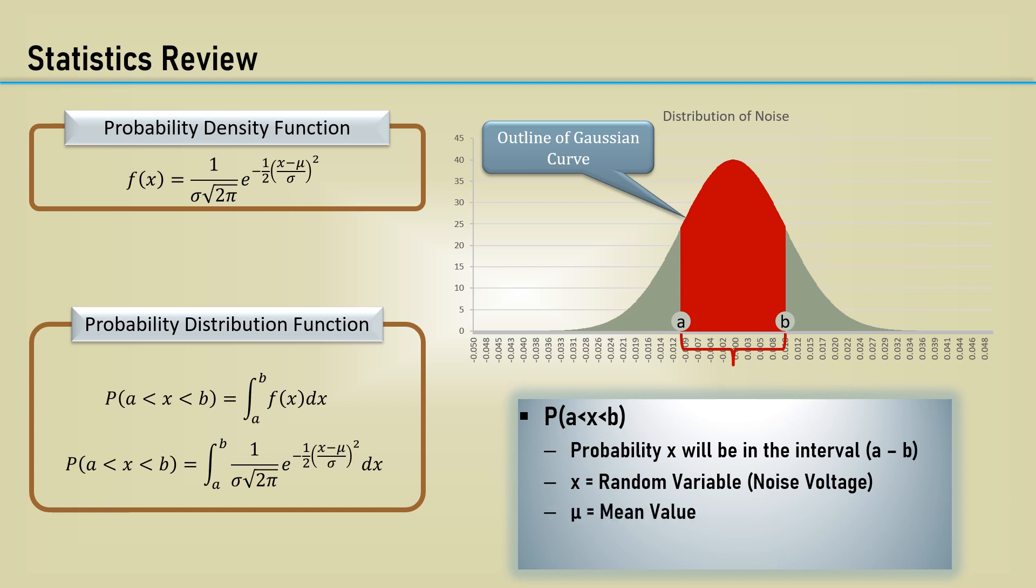Mu is the mean value of the distribution, and sigma is the standard deviation.